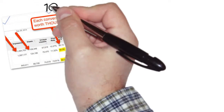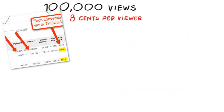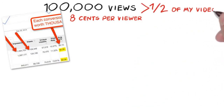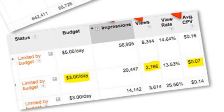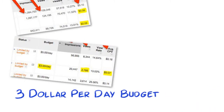As you can see, this campaign is getting well over 100,000 views and only costing 8 cents per viewer, who then goes on to watch more than half of my video. And this one is only running on a $3 per day daily budget and still getting thousands of views and only costing 7 cents per viewer.